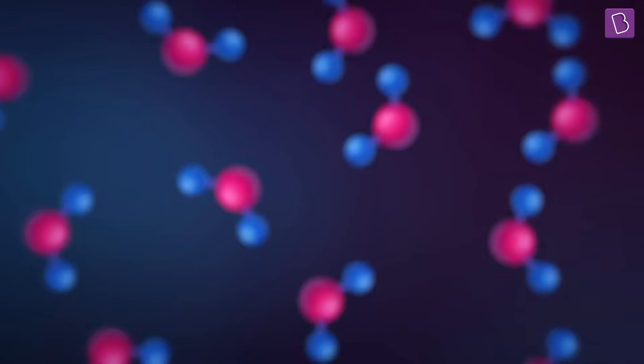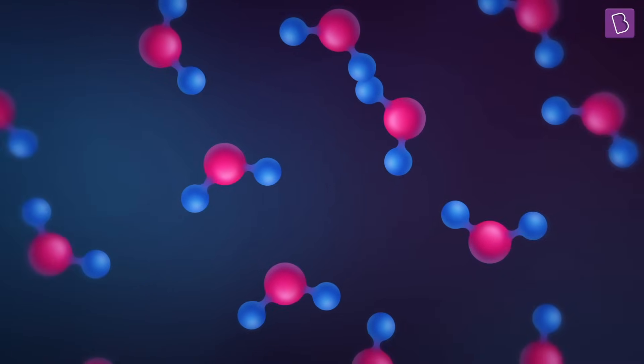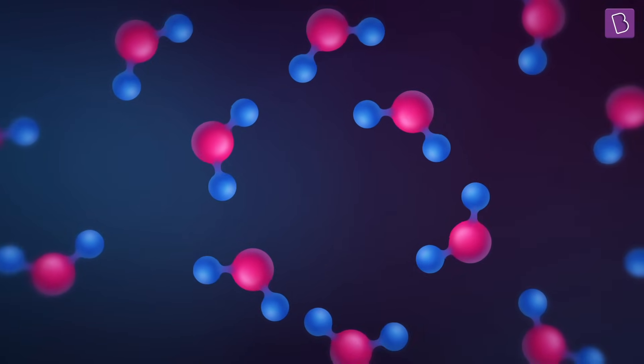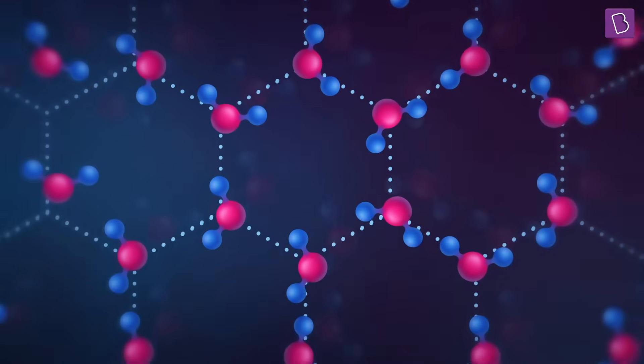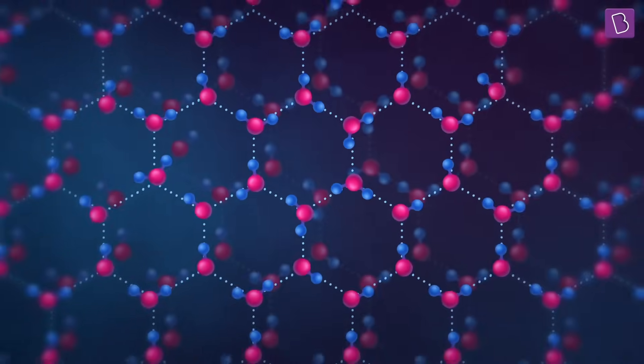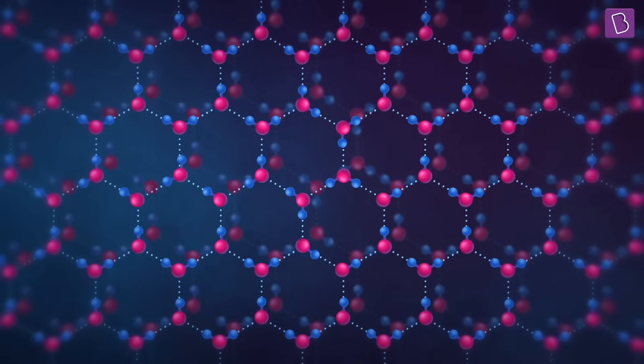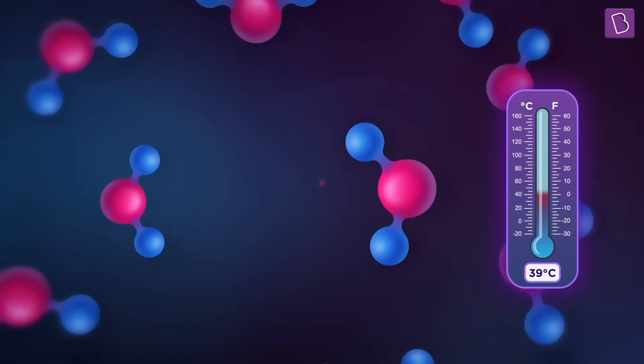If you zoom into the molecular level, you will see these randomly moving H2O molecules, which if cooled below zero degrees convert into ice and get locked in a beautiful cage-like structure. We have an entire video explaining how this happens, so do check it out. Now let's observe what happened during the cooling.